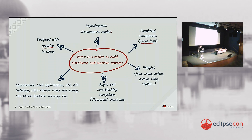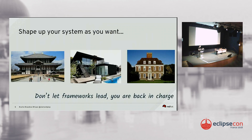Vert.x has a huge ecosystem and a clustered event bus, and is used today for microservices, web apps, IoT, API gateways, high-volume event processing, full-blown backend message buses — and these are production usages. How is it possible that a single toolkit goes from IoT to financial systems? It's simple: it's all about freedom. Vert.x won't tell you how to build your system — you have more knowledge about your business than we do, and we want to keep it that way.